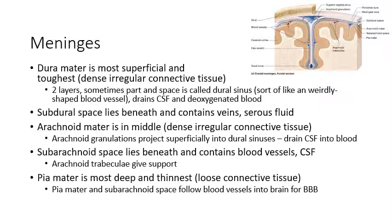Beneath the dura mater, you have the subdural space, and then beneath that, the arachnoid mater, which is the middle membrane. It's also made of dense regular connective tissue but is much thinner. There are little pores going from the arachnoid mater, crossing the subdural space, and connecting with the dura mater and the dural sinuses specifically. These are called arachnoid granulations, and that's how CSF drains into those dural sinuses.